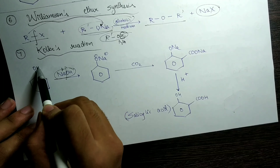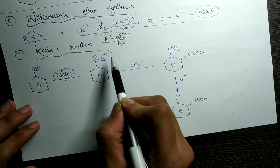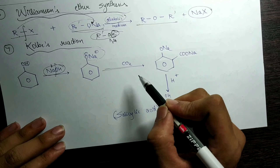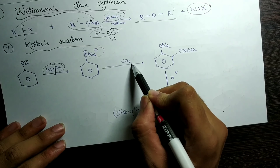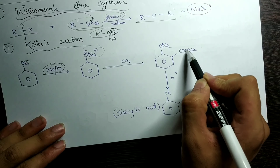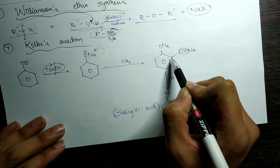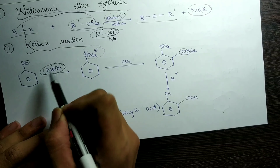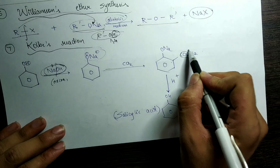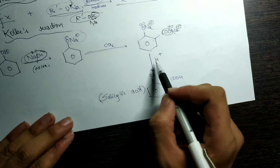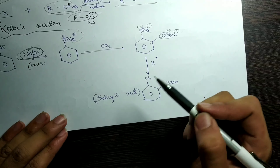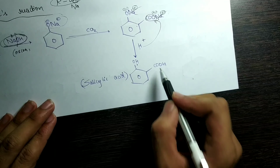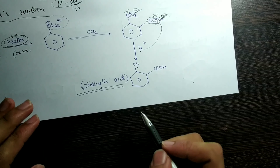Now the sixth reaction is Williamson's ether synthesis. From this reaction onwards we start with the chapter of alcohols, phenols, and ethers. We take an alkyl halide and make it react with RO⁻Na⁺ — this is an alcoholic medium. The medium is maintained as alcoholic because this compound is derived from ROH reacted with sodium, where H leaves and Na replaces the hydrogen atom to give RO⁻Na⁺. Then this bond is broken, R attaches in place of Na, and we get R-O-R' plus NaX. It is just a direct substitution reaction.